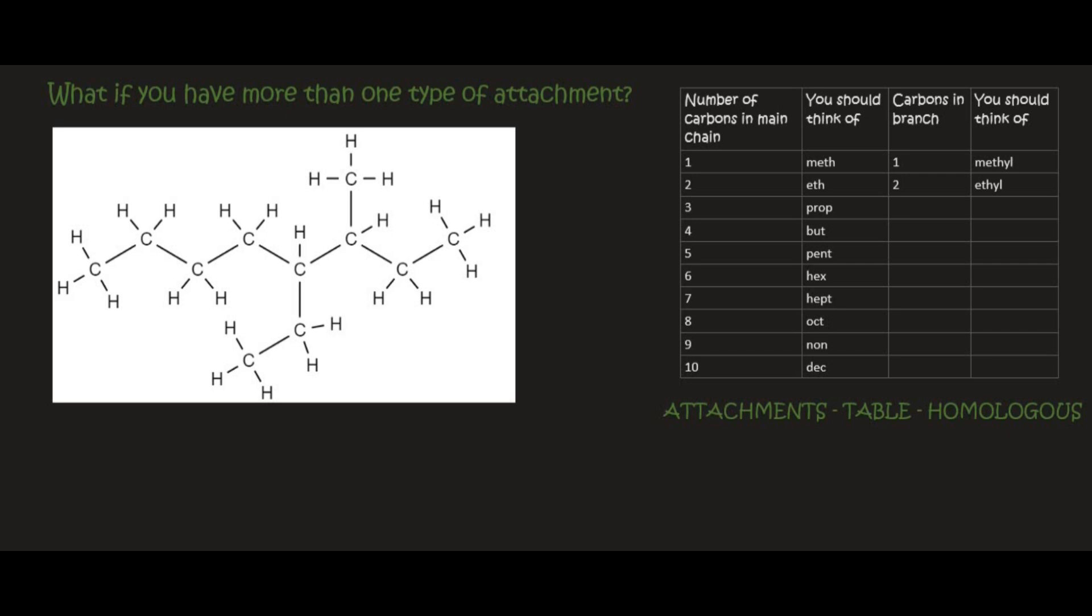Here's the last one. What we should always do is identify the longest continuous chain. Here we've got eight carbons, so that's going to be oct. We see that there's only single bonds, so that's an alkane. Everything sticking out is an attachment. We need to label it so that the attachments have the lowest number. That will be from the right hand side because that will be on carbon number one, two, three, and then carbon four. So it'll be carbon three and four.